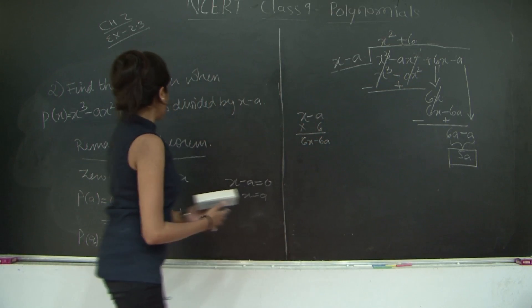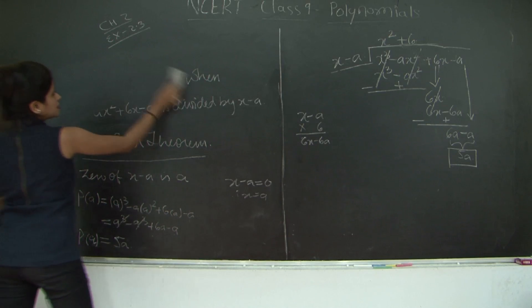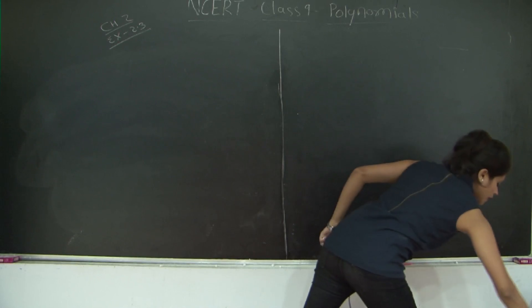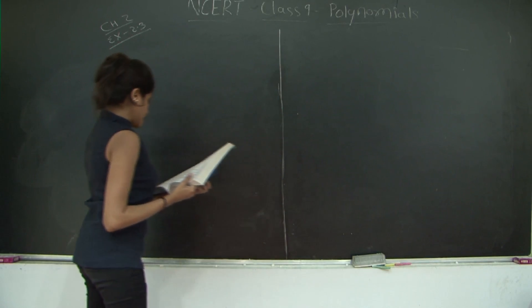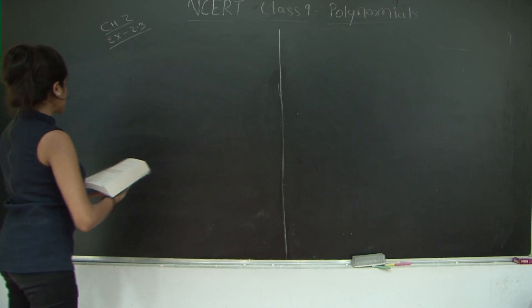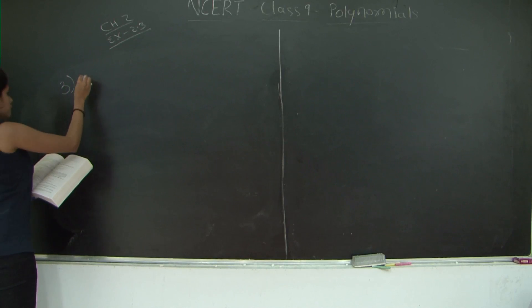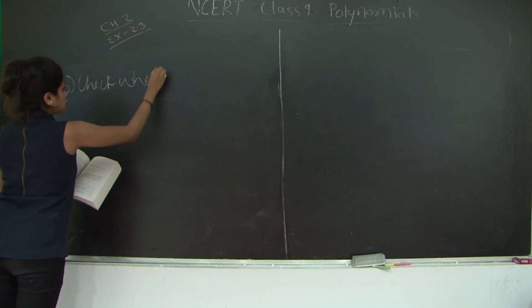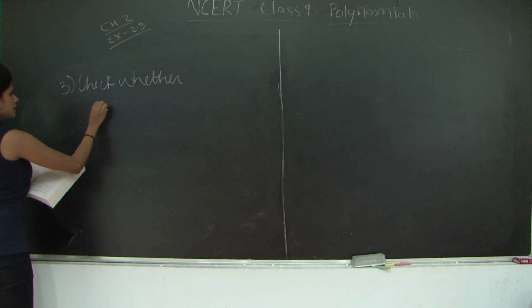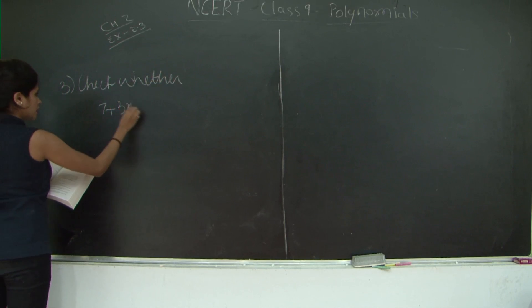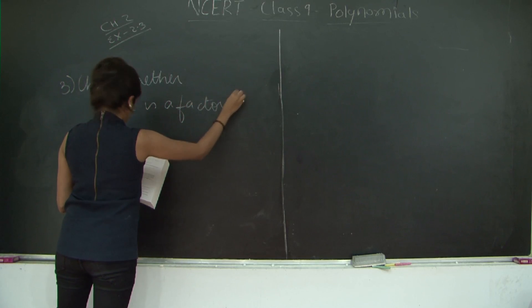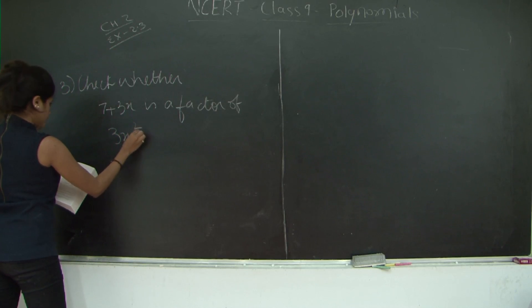Now we will proceed with the last sum of your exercise 2.3. Let me quickly erase the board. So what is the sum? Check whether 7 plus 3x is a factor of 3x³ plus 7x.